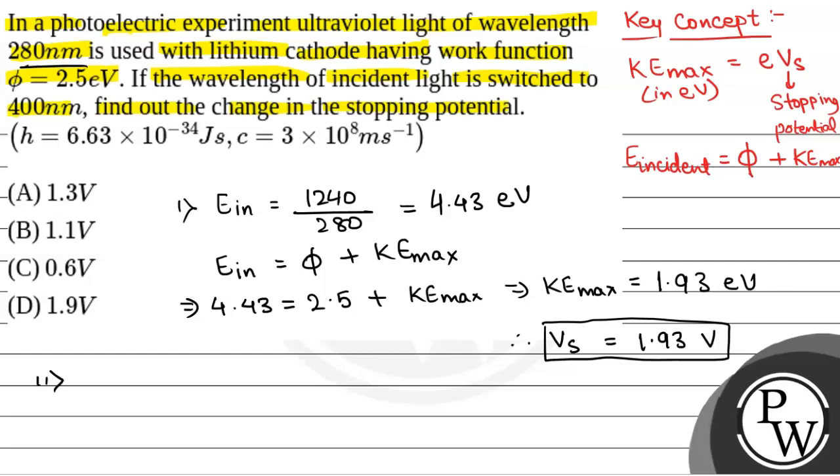Now, we will see in the second case, we will calculate the energy incident that will be equal to 1240 by 400 because in the second case, the lambda incident is 400 nanometers. So, that will be equal to 3.1 electron volts.